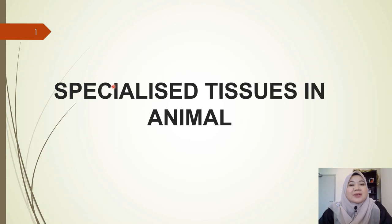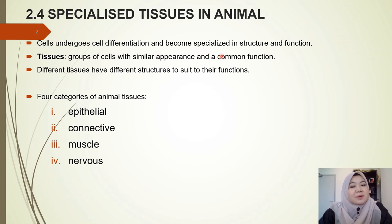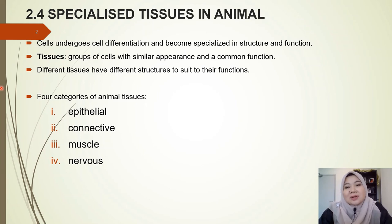Hello everyone. Here's the next subtopic in this chapter: the specialized tissues in animals. In multicellular organisms, cells undergo cell differentiation and become specialized in structure and function. This enables the cells to form tissues, and tissues can associate with each other to form organs, and organs make up the organ system.